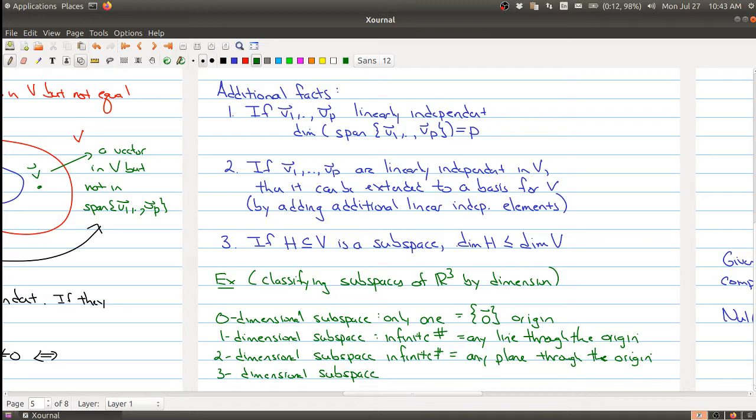And then what are the three dimensional subspaces? Well there's only one, namely the whole space itself. And you can't have a four dimensional subspace because you would be breaking this fact right here, because we're sitting inside of R³. Our V is R³, so this number here is 3. So all subspaces have to be 3 or smaller.